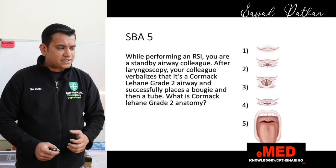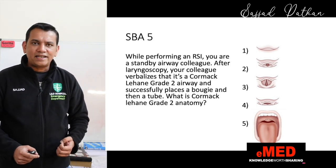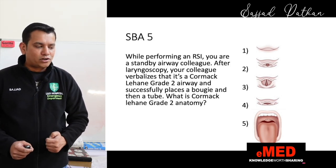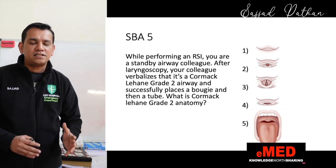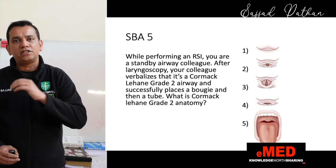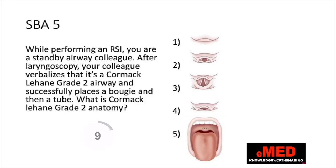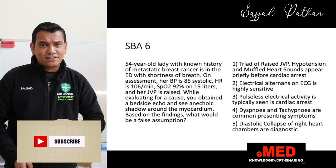Question five: While performing an RSI you are the standby airway colleague. After laryngoscopy your colleague verbalizes that it's Cormack-Lehane grade 2 airway and successfully places a bougie and then a tube. What is Cormack-Lehane grade 2 anatomy? This is a simple bread-and-butter question you should not get wrong. The answer is option 2 — if you got this correct, pat yourself on the back.